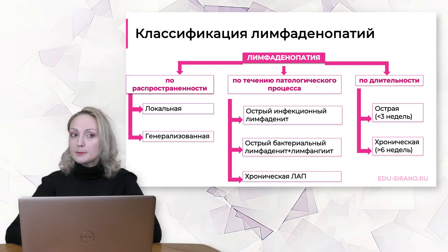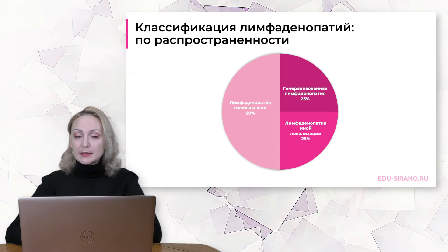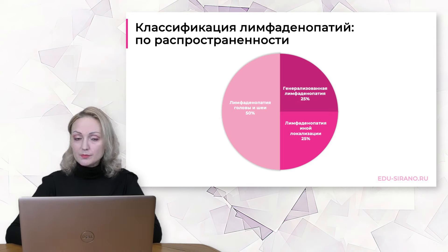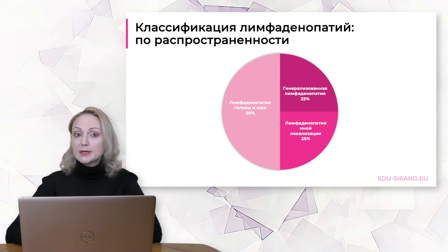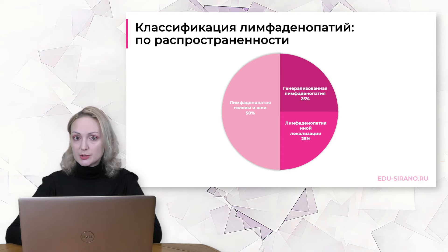Локальная и генерализованная лимфаденопатия – мы уже обсудили классификацию по распространённости. Важно отметить, что генерализованная лимфаденопатия составляет около половины всех случаев увеличения лимфатических узлов у детей. Локальная лимфаденопатия составляет около трёх четвертей всех случаев в данной возрастной группе.